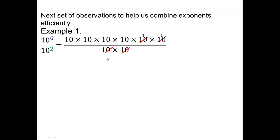So what am I left with? This 10 divides into 10 once, and this 10 divides into this 10 once. So you're really dividing each of these by 10. Your denominator is going to be 1, and your numerator is going to be 10 to the 4.